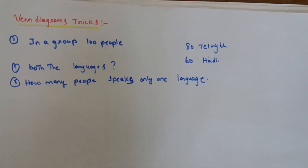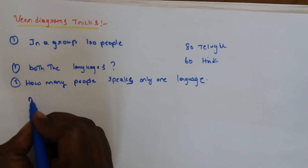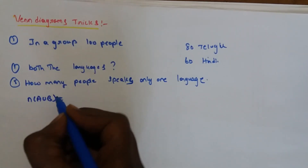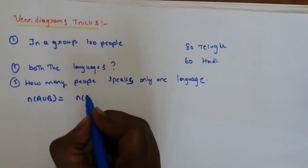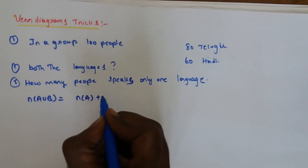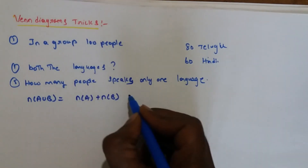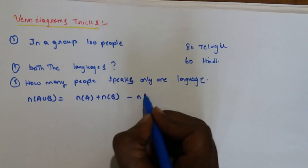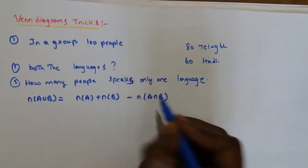We will use the formula: N of A union B is equal to N of A plus N of B minus N of A intersection B.